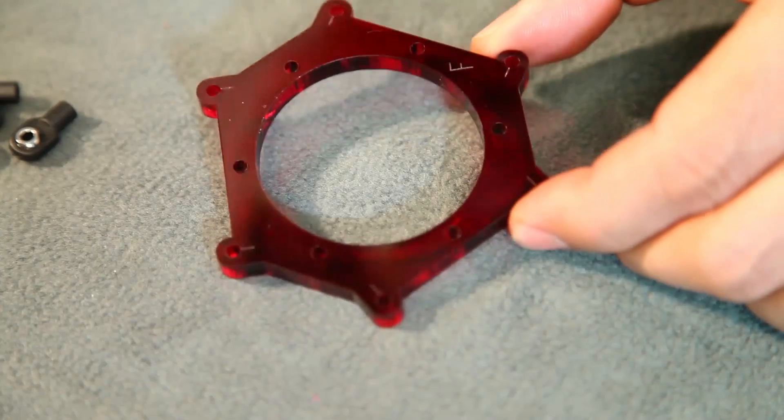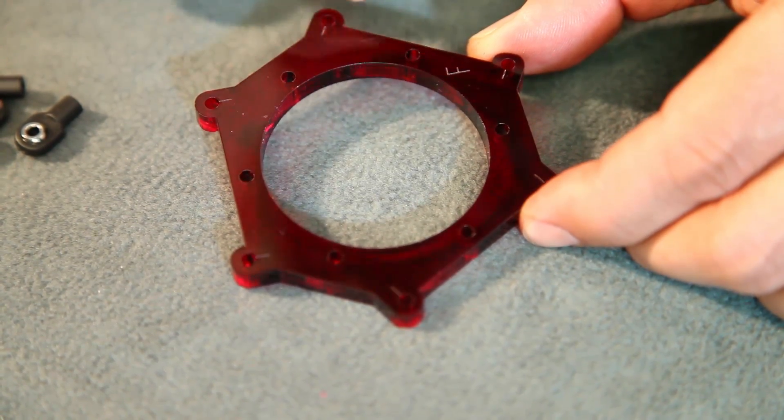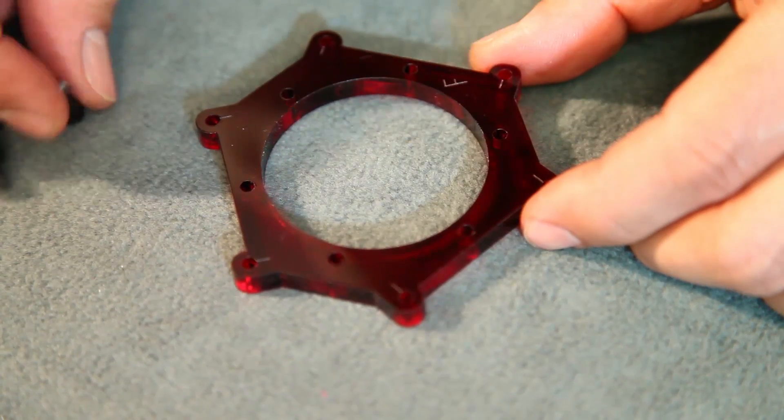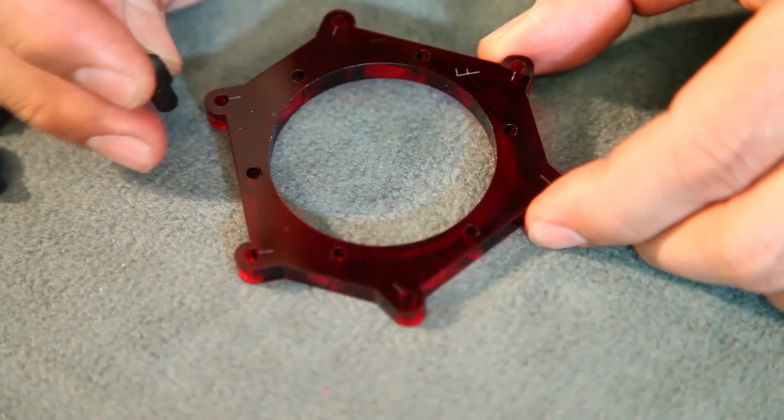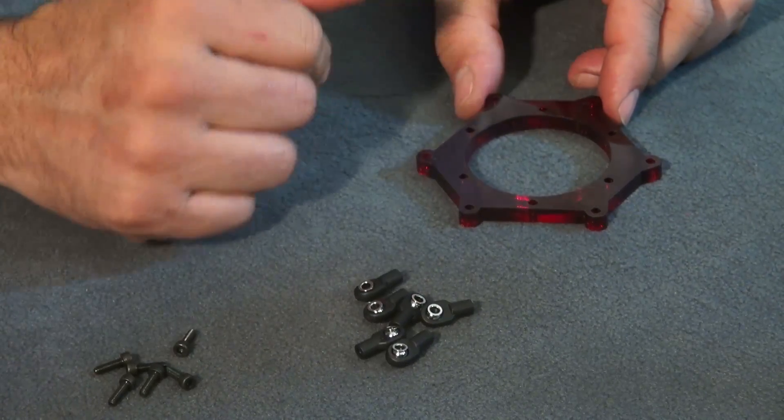You can see, if you notice here, on these outside holes, you're going to have these little hash mark lines. And just like earlier, when you install these ball joints, you're going to make sure that they line up with the hash marks. So we'll keep that in mind when we're putting this together.